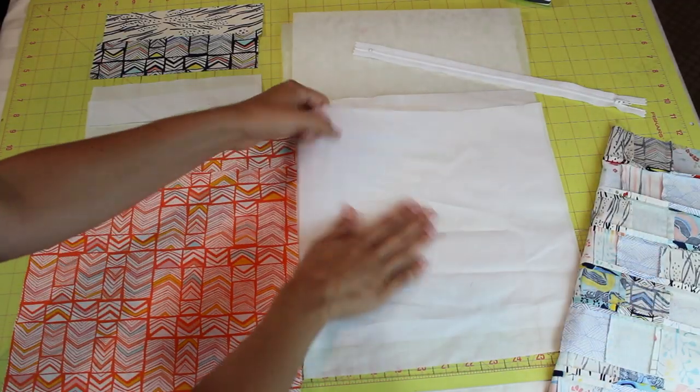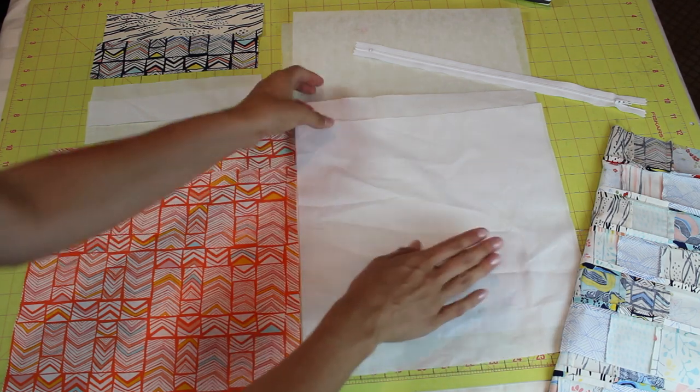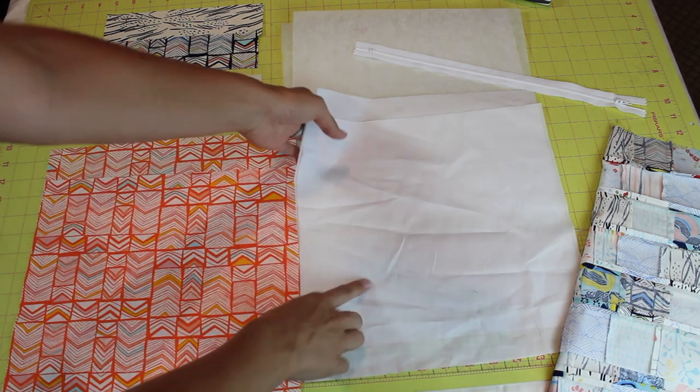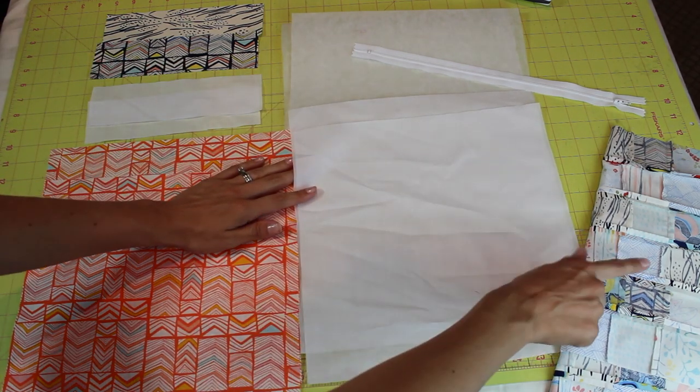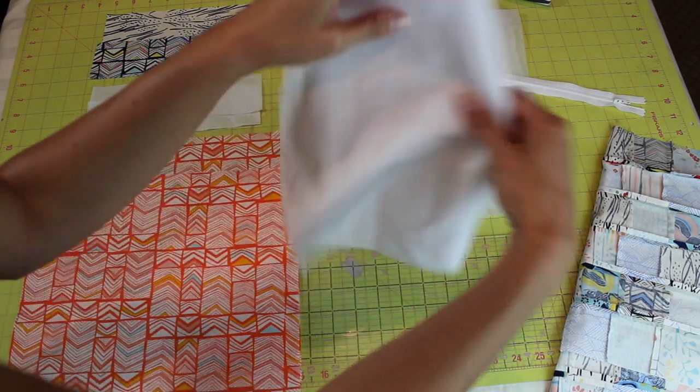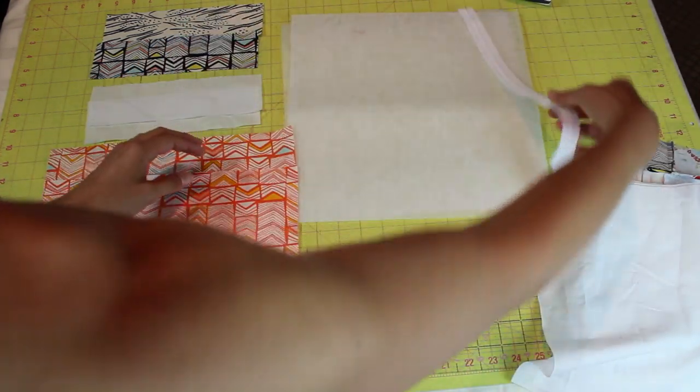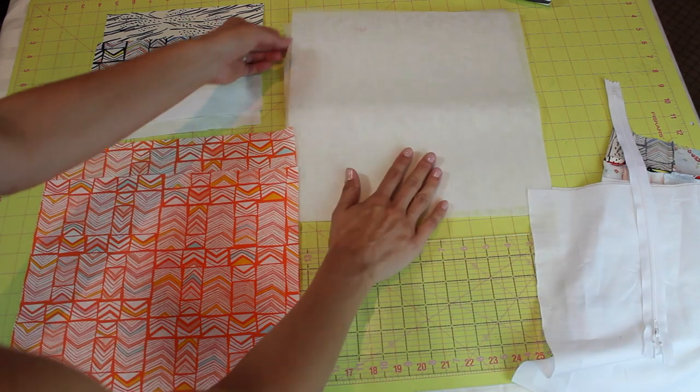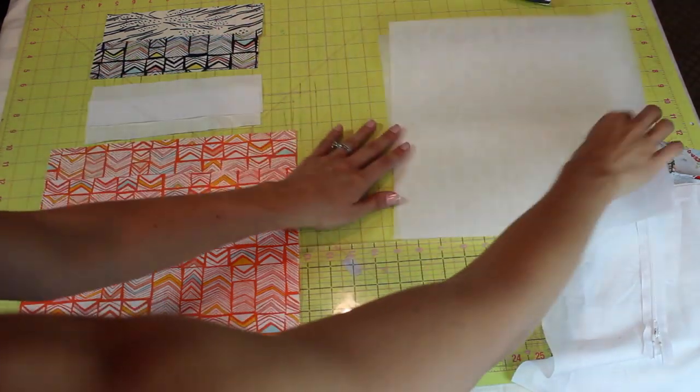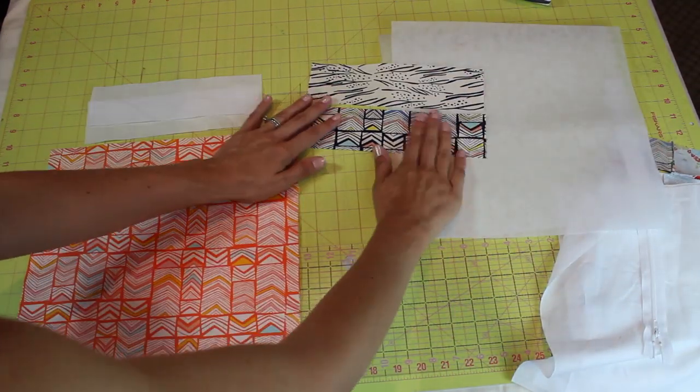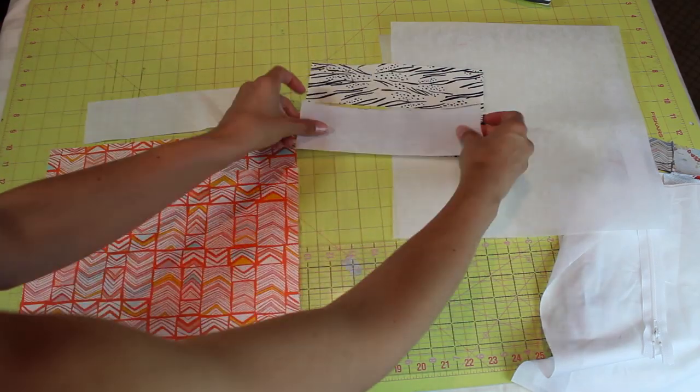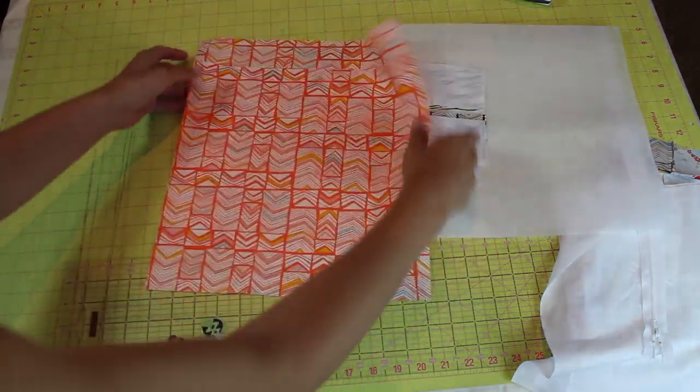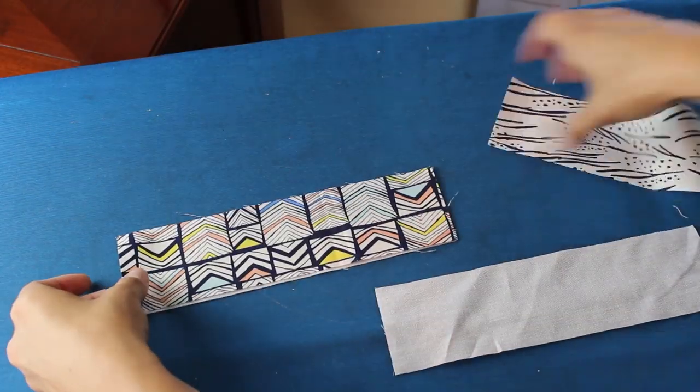So here are our patchwork pieces. This is the Pellon SF101 which is the fusible woven interfacing. It just helps to give an added body. We're going to put that on the patchwork pieces. Next is a 14 inch zipper. And then this is sew-in Pellon 910 interfacing. These are two and a half by nine inch handle pieces and the SF101 to go with that and the lining.